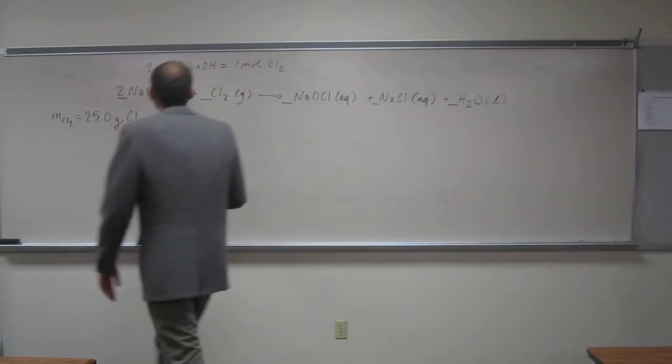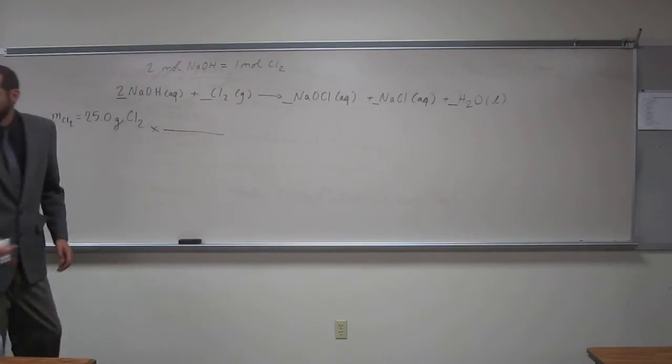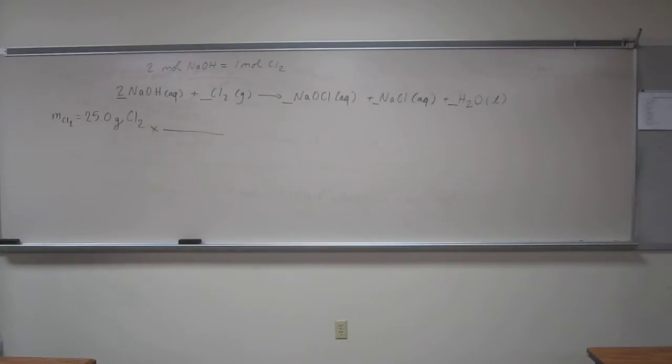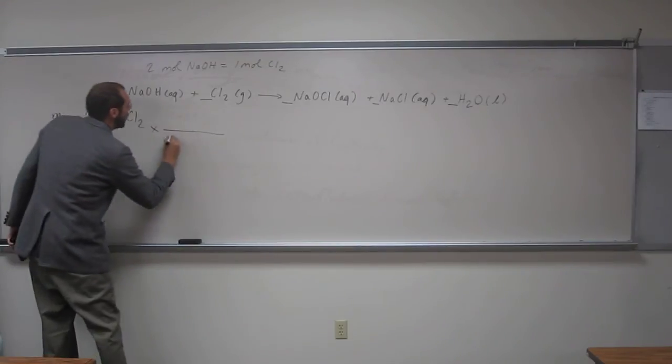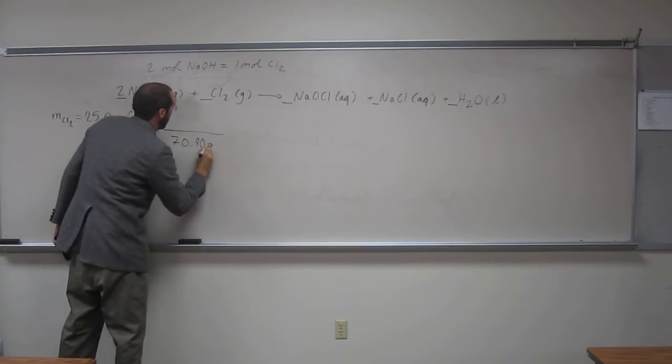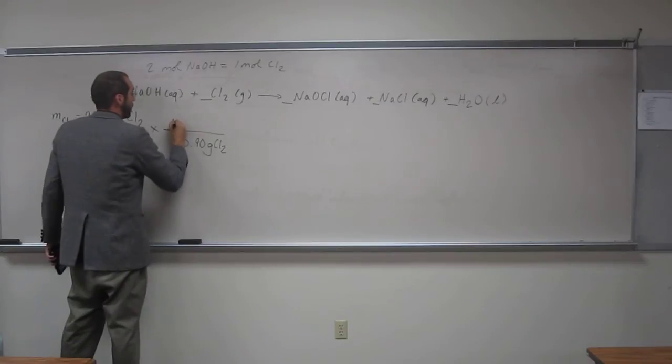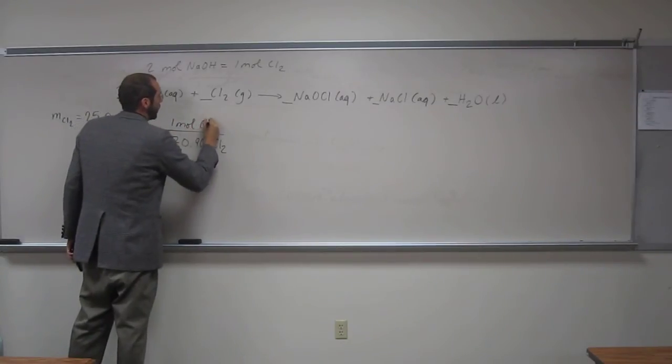If we look up at the periodic table, it's 35.45, so 35.45 times 2 is 70.90 grams of chlorine per one mole of chlorine.